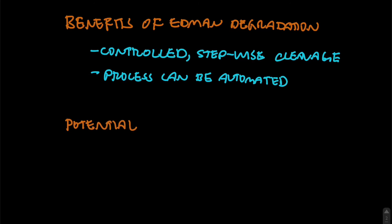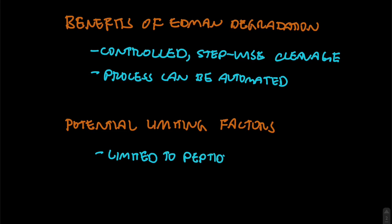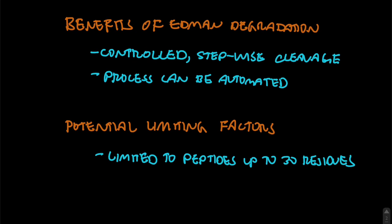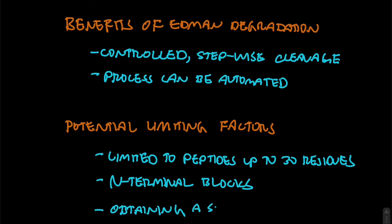All good things don't come without drawbacks. One limitation is that Edman degradation is limited to peptides of up to 30 residues. Since chances are high that the sequence you're studying is longer than 30 residues, that sequence will first need to be cleaved before you can begin Edman degradation. Another limiting factor is that many eukaryotic peptides often have an N-terminal block that prevents the binding of Edman's reagent. Finally, you have to isolate and purify one single protein so that you're not sequencing two different proteins at the same time.